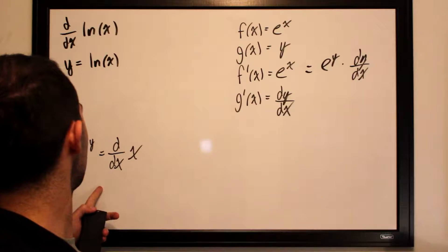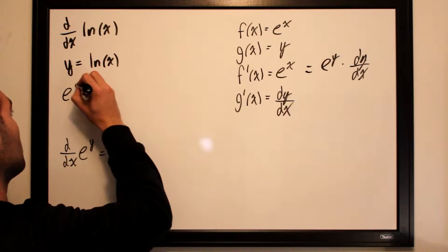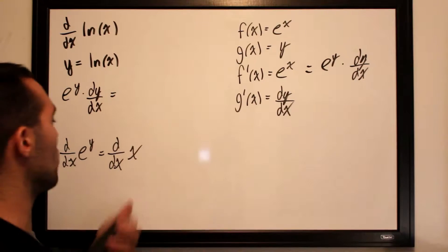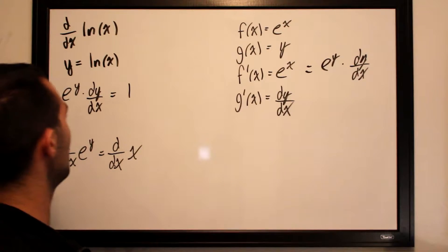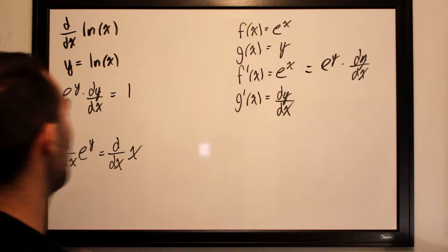And then essentially what we've got over here is e to the y times dy by dx is equal to the derivative of x on this side which is just 1. So what we want to do now is isolate dy by dx.